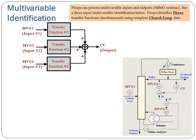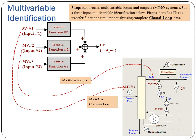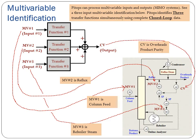PyTops can process multivariable inputs and outputs — MIMO systems. See a 3-input multivariable identification below. PyTops identifies 3 transfer functions simultaneously using complete closed-loop data. MB1 is column feed, MB2 is reflux, MB3 is reboiler steam, and CB is overheads product purity.